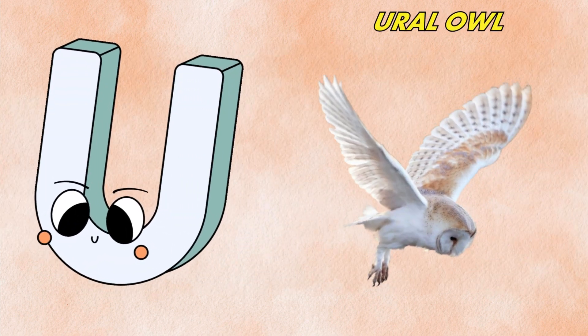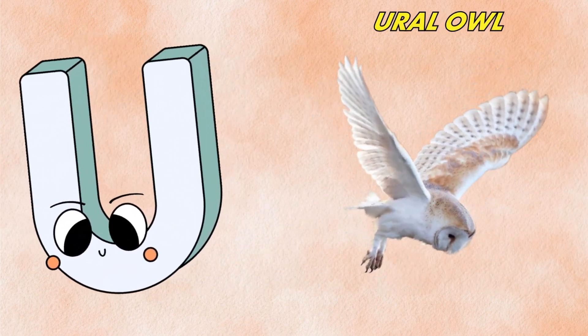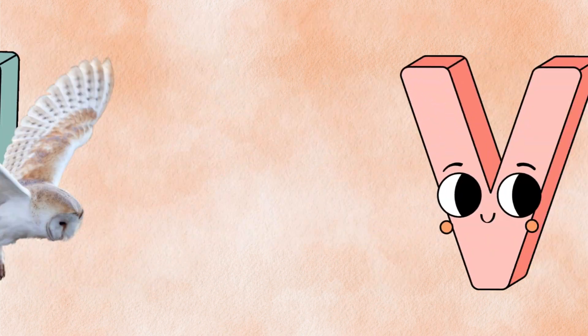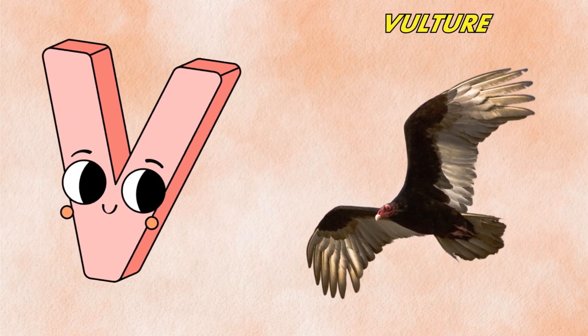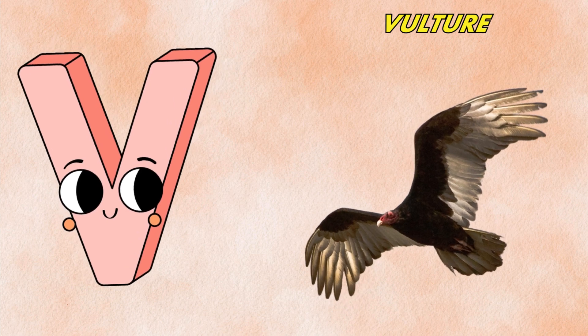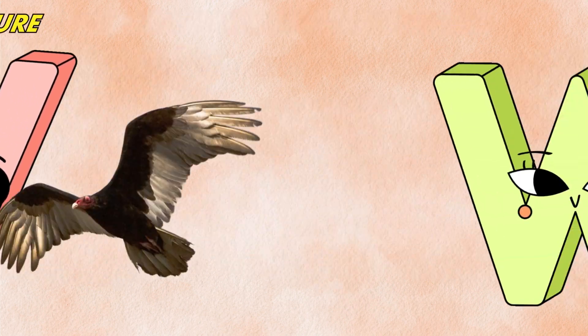U is for ural owl, a, ural owl. V is for vulture, v, vulture.